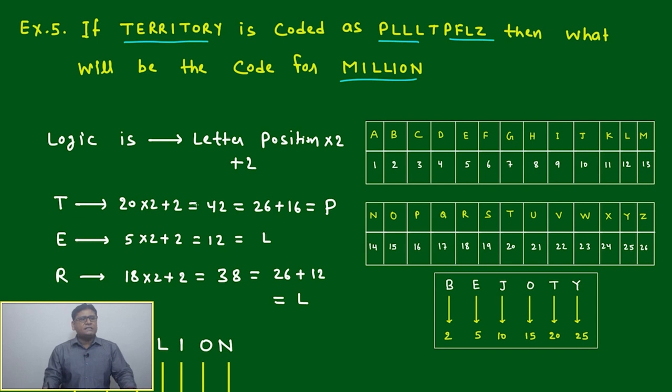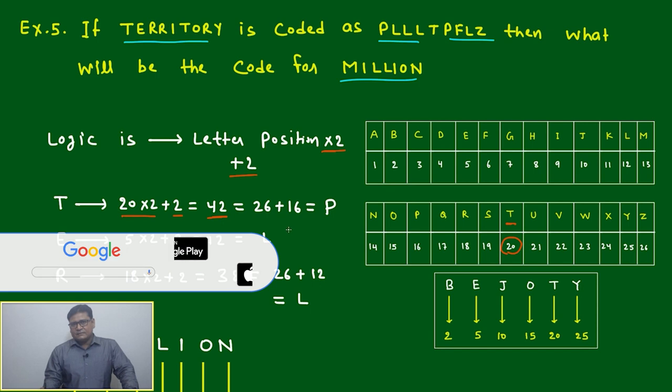The logic is: letter position multiplied by 2, and afterwards add 2. For example, T is at position 20. 20 multiplied by 2 and add 2, it will become 42. If your number is coming more than 26, then what will happen? You have to just repeat. 26 plus 16 equals 42 minus 26, and you will find the 16th position.